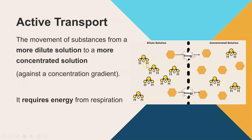Looking at this diagram, the dilute solution has lots of water molecules but only two solute molecules — that could be sugar, salt, or whatever solute has dissolved. In comparison, the concentrated solution has very little water relative to the solute. When we say it's going against the concentration gradient, we mean going from an area with very little solute to where there is a lot. The term used in the mark scheme is 'dilute solution to more concentrated solution.'